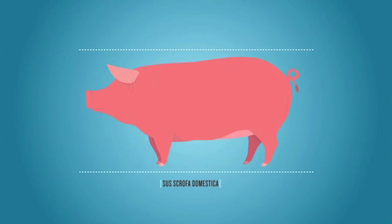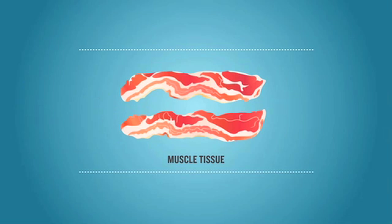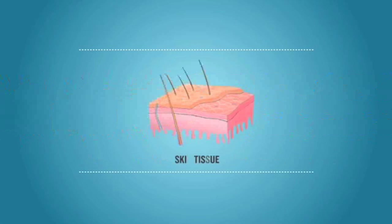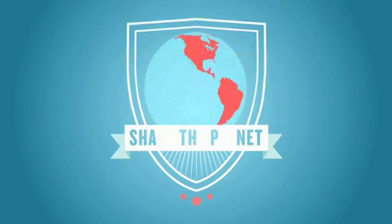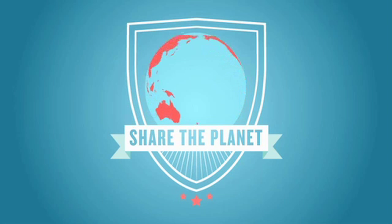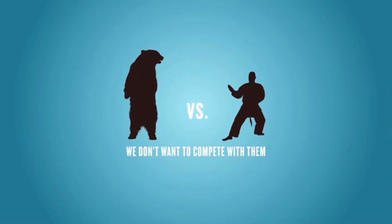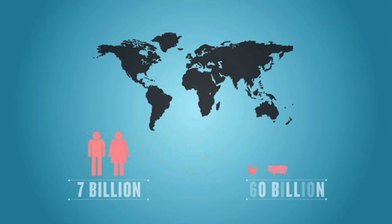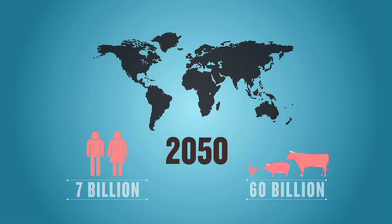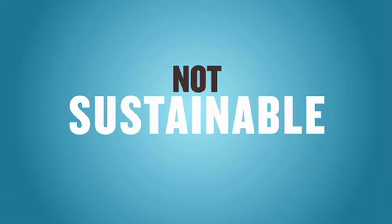We try to make the same muscle tissue, the same skin tissue, but not with all its ingredients. We want to share the planet with the animals but we don't want to compete with them. Right now we're 7 billion on the earth and there are 60 billion animals, and by 2050 we will be 9 billion with about 100 billion animals — this is just not sustainable. So we just take the cells and make the same thing as nature does, without the entire animal.